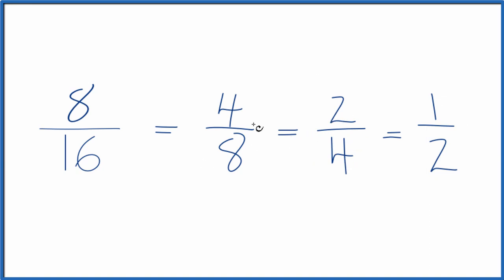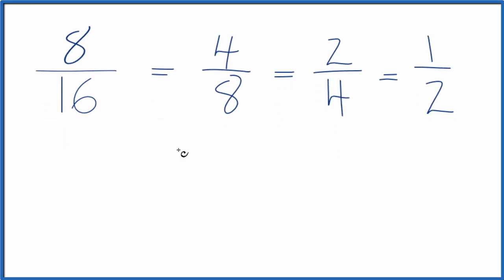Let's do one more. Instead of dividing by 2, let's multiply the numerator and denominator by 2. 8 times 2, that's 16. 16 times 2, that's 32. So 16 over 32, that's another equivalent fraction to 8 16ths.